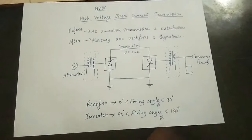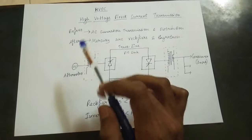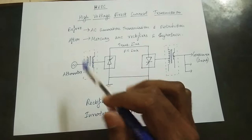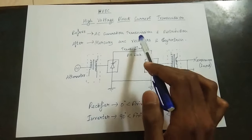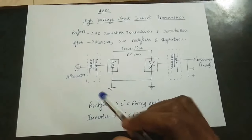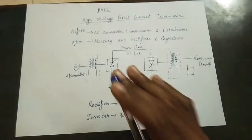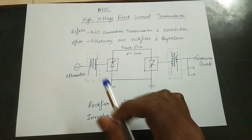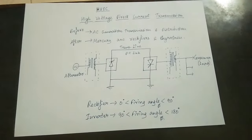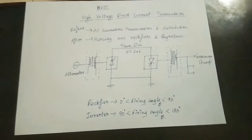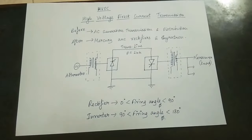Before HVDC, we use AC generation, transmission, and distribution. After AC generation, DC transmission comes into play. The line of DC uses a transformer — first we transform AC, then we transform to DC.